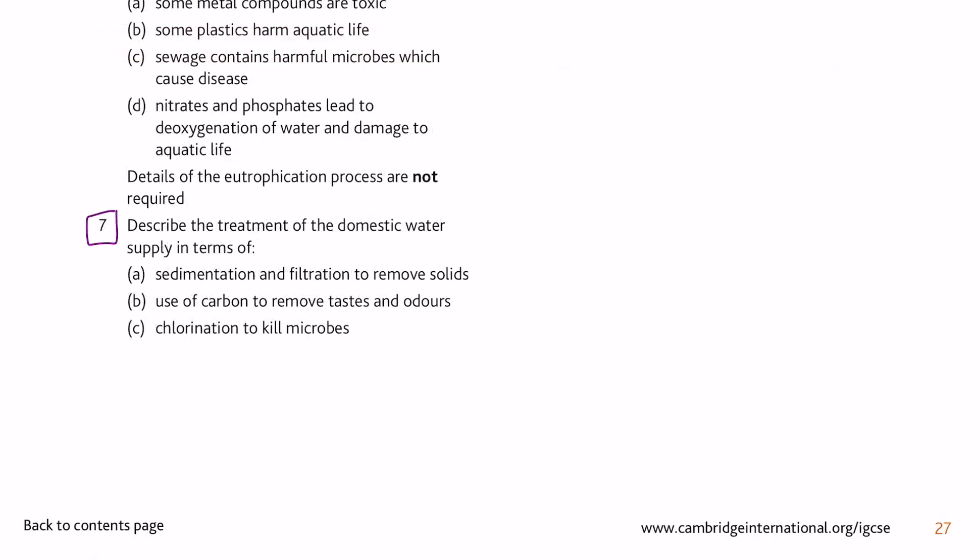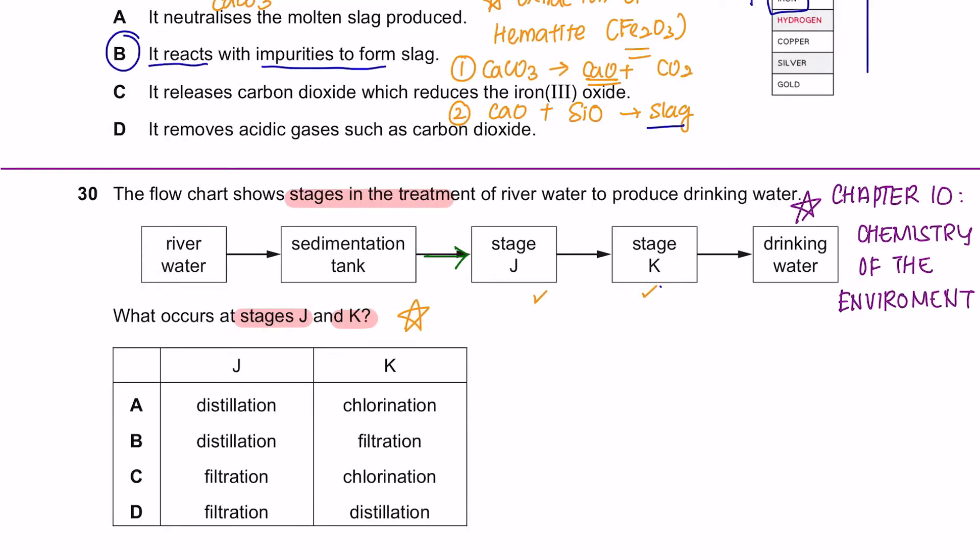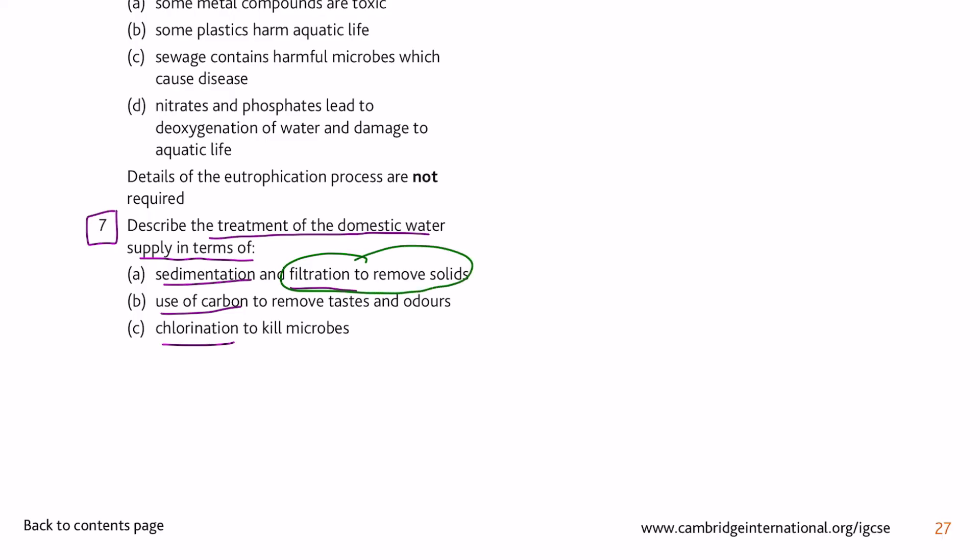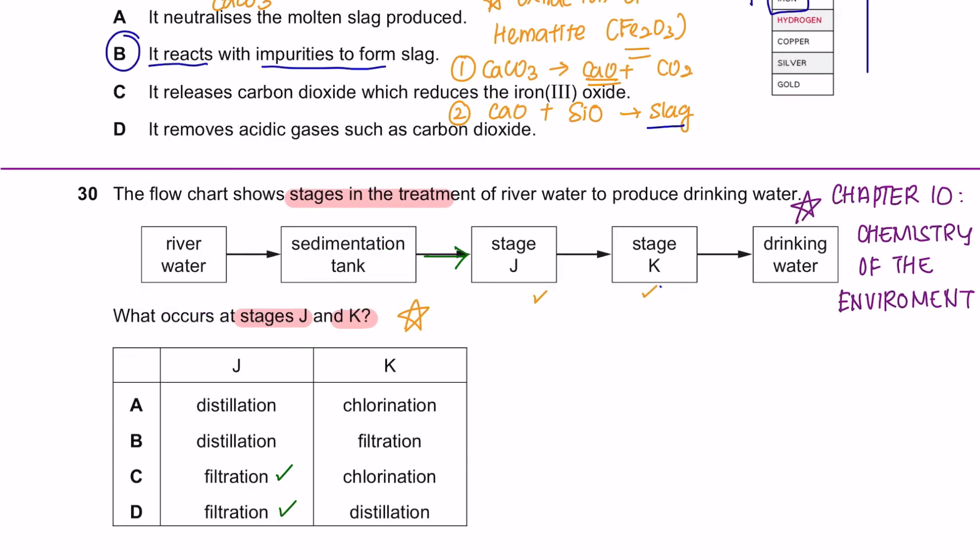So under chapter 10, you will see that they have already mentioned to you that you must know the treatment of the domestic water supply in terms of sedimentation, filtration, addition of carbon and chlorination. So after the step of sedimentation, you are going to filtrate to remove solids. So at stage J, it's filtration.